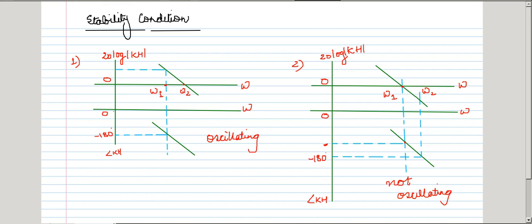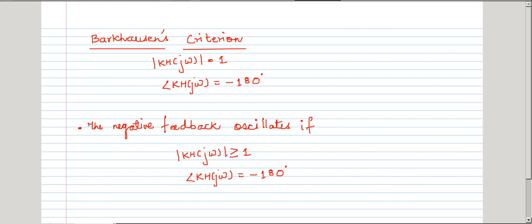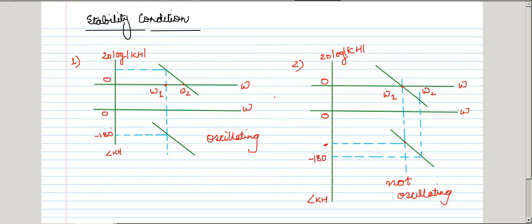We have seen Barkhausen's criteria: these two criteria should not coincide with each other. In the first case, at omega 1, the phase reversal takes place, but we are not getting a 0 dB gain there — the magnitude response approaches 0 dB at omega 2. Since phase reversal occurs at omega 1 before unity gain is reached, the system is oscillating. In the second case, the magnitude response approaches 0 dB at omega 1, but phase reversal does not take place until omega 2. Hence, the system is not oscillating.